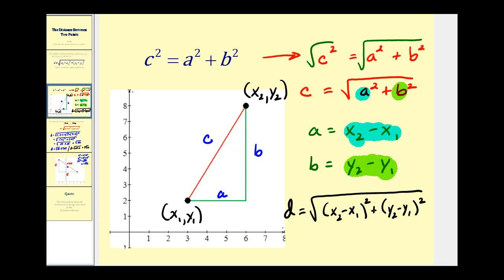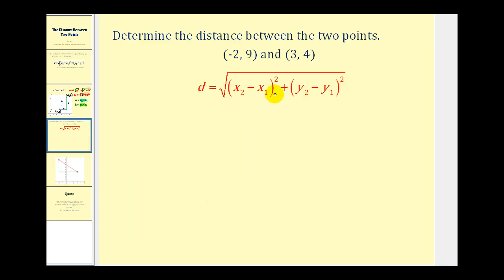Now let's do an example. We want to determine the distance between the points negative two, nine and three, four. The first thing I like to do is label the coordinates. I'm going to call this x sub one and this y sub one, and I'll call this x sub two and this y sub two. It doesn't matter whether we label these the ones or the twos, but if we call this x sub one we do have to call this y sub one — we can't interchange the ones and twos within a given point.